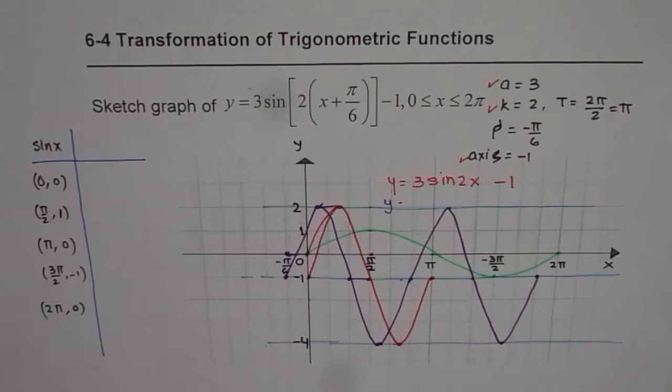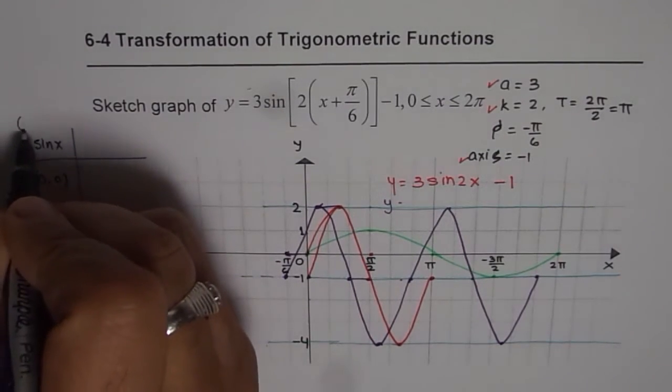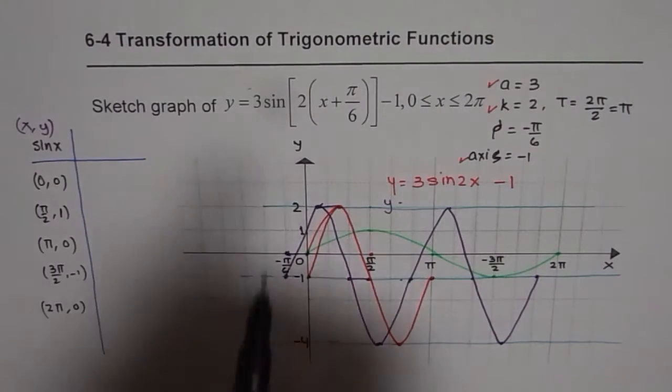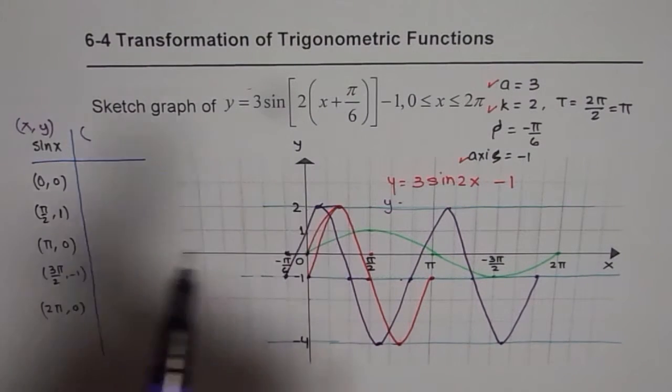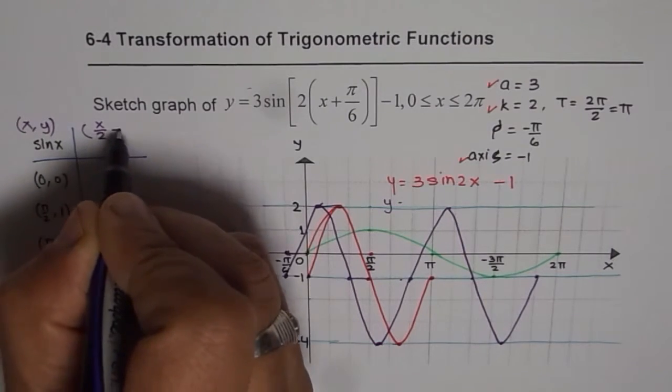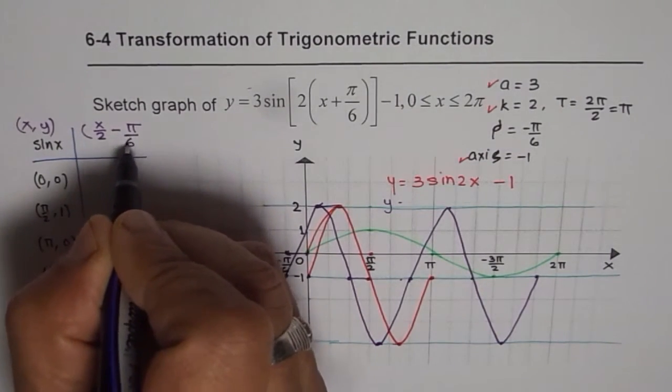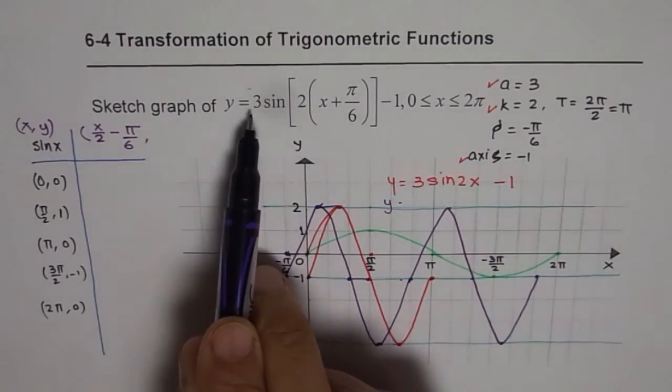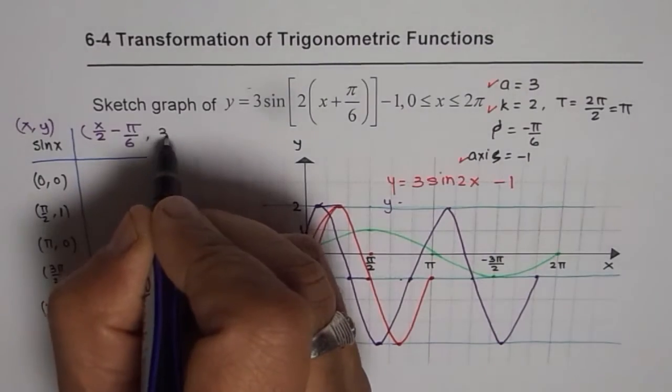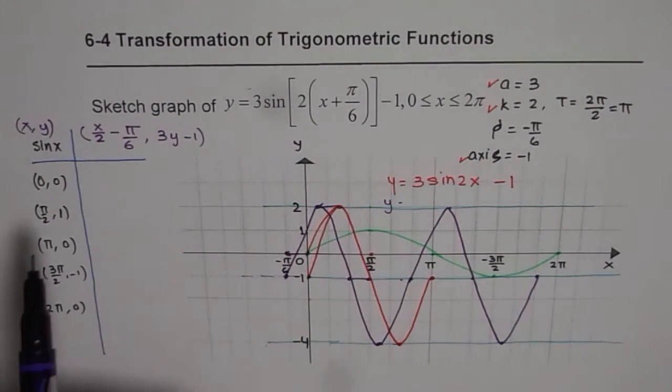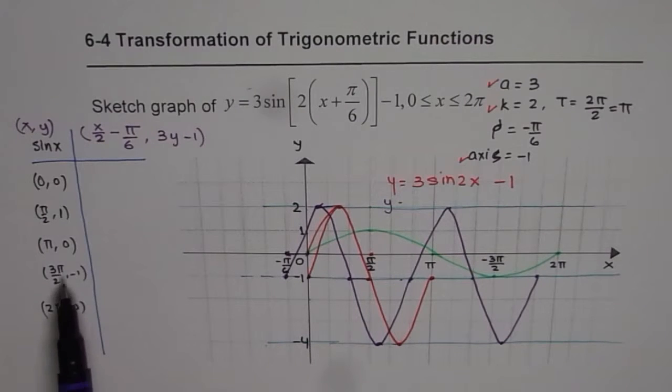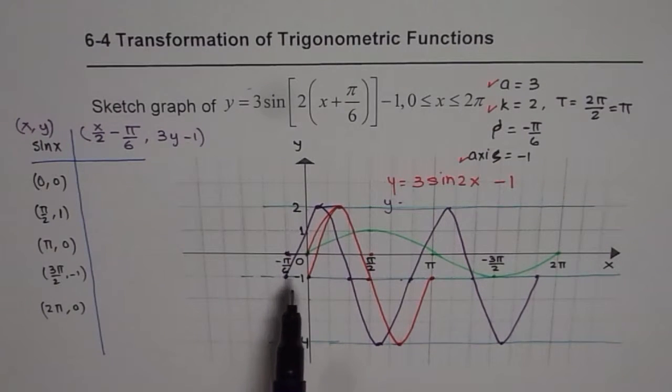And of course, the other way is we can use the image points. Now as you can understand, transformation of a coordinate point (x, y) on sine of x will be: x points will be half and minus pi by 6. So x points will be x divided by 2 minus pi by 6. That is the image of the x coordinate points. Y coordinates will be 3 times, so 3 times y point minus 1. So that becomes the way of getting to the final transformed function.